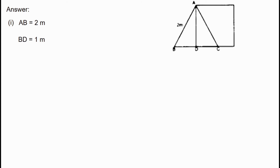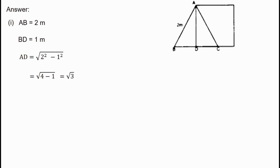We write down the height of BC. If we consider ABD as a hypotenuse and AB as the base, then AD equals √(2² − 1²). That is, √(4 − 1) equals √3.